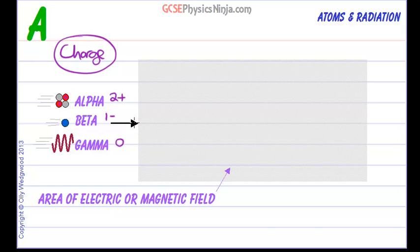Going to deflect in opposite directions. So let's do the alpha deflection first and we will say that the alpha particles are going to be deflected that way, upwards.